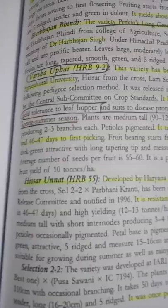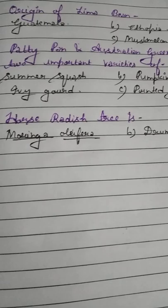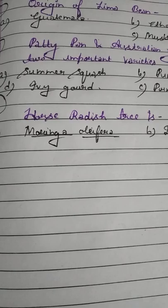Question number 9. Patty Pan and Australian Green are varieties of: Option A: Summer Squash. Option B: Pumpkin. Option C: Pointed Gourd. Option D: Ivy Gourd. These are varieties of summer squash. Note: pumpkin gourd and ivy gourd are both dioecious — please remember this.